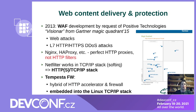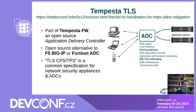Tempesta FW is a hybrid of an HTTPS proxy and a firewall, and it's directly embedded into the Linux TCP/IP stack. Tempesta TLS is a part of Tempesta FW, and Tempesta FW is considered an open source alternative for applications like F5 Big-IP or Fortinet Application Delivery Controllers.